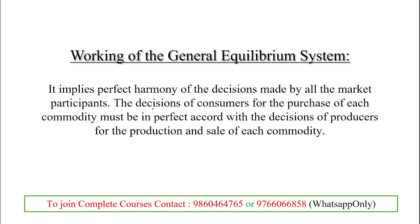The working of the general equilibrium system requires perfect harmony of decisions among market participants. The purchase of each commodity must be in perfect accord — the decisions of producers and consumers regarding production, sale, and purchase of each commodity must align, resulting in a supply-equals-demand condition for general equilibrium to exist.